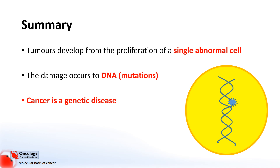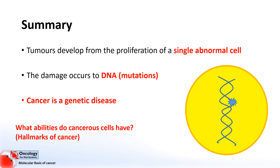So we've found out where damage might occur that can lead to cancer — these DNA mutations — but so far we've only really talked about what mutations are in general. As you may well be aware, mutations can cause all sorts of changes within cells, and just because a cell has a mutation doesn't mean it will become cancerous. The mutations that the cell must gain must give it the ability to do things that cancer cells do. What are these abilities? That's what we're going to be beginning to cover in the next talk: Hallmarks of Cancer.